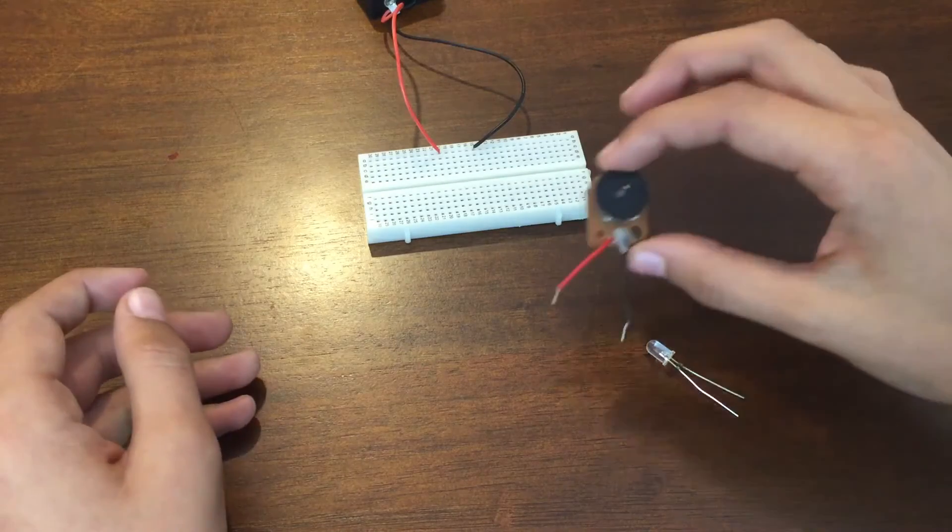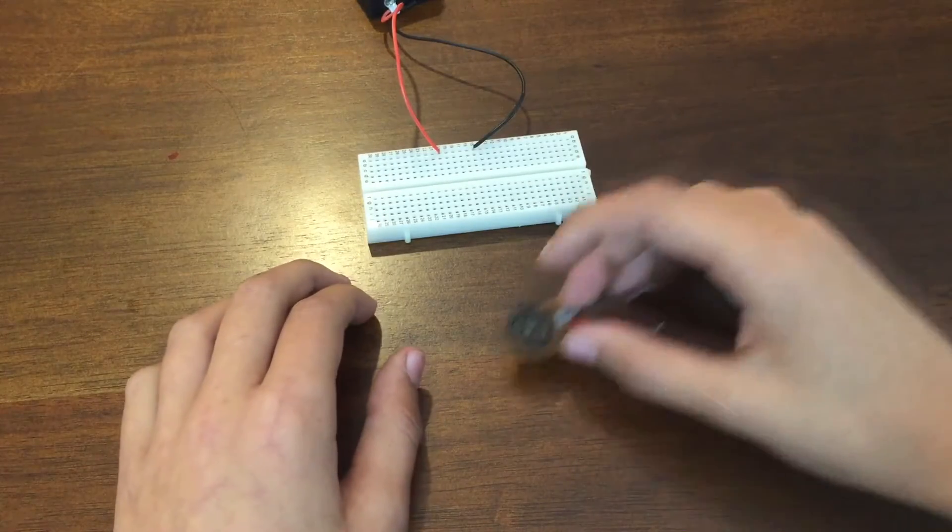Hey guys, it's Michael. Today I'm going to be showing you how to use a potentiometer to control the brightness of an LED or the speed of a motor.